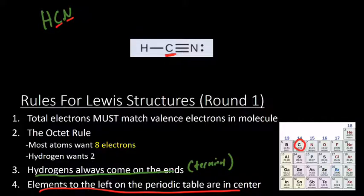Well, the rule here is that elements to the left on the periodic table are in the center. So carbon is going to be in the center. So there's a number of reasons for that, which we won't go into, but just know that as you go to the left on the periodic table, the further they are on the left, that's more likely to make them central. Okay, so those are the rules for Lewis structures.